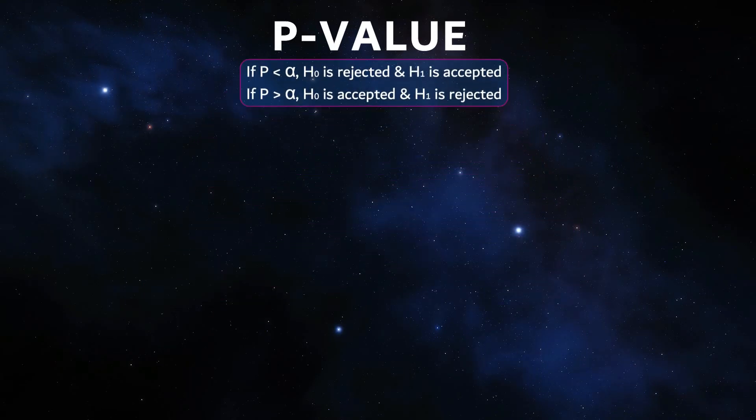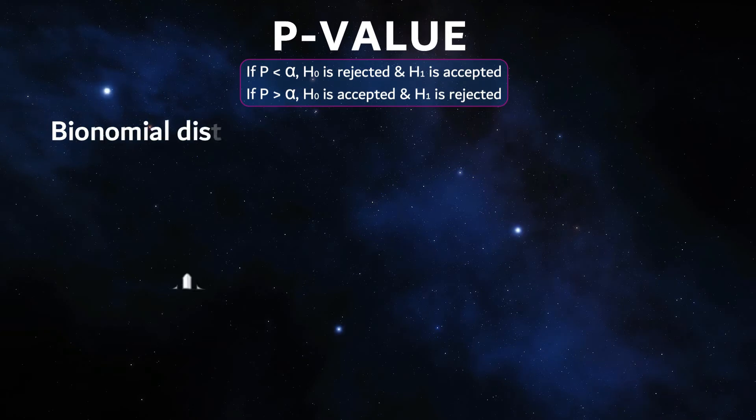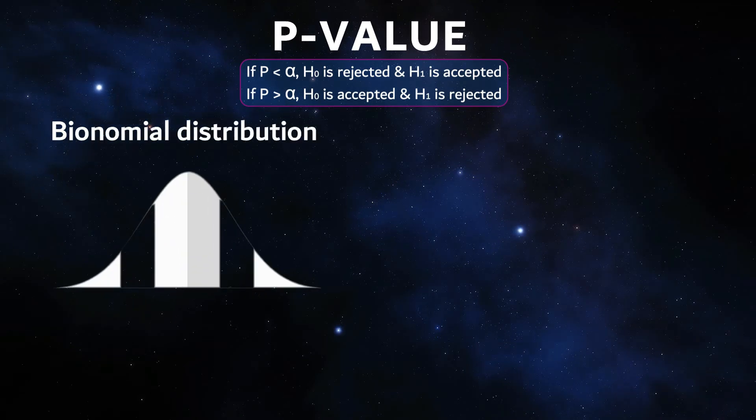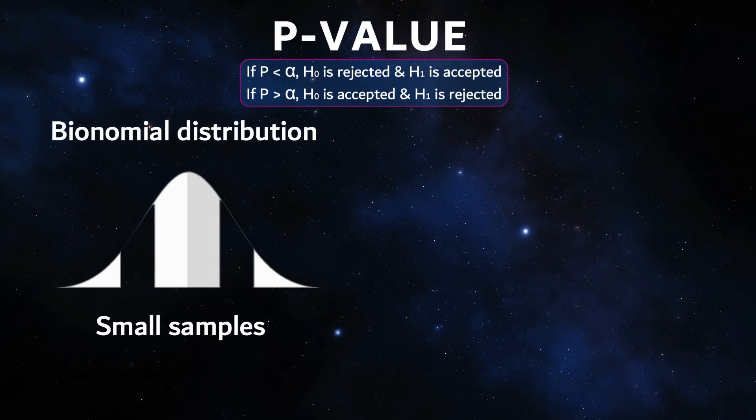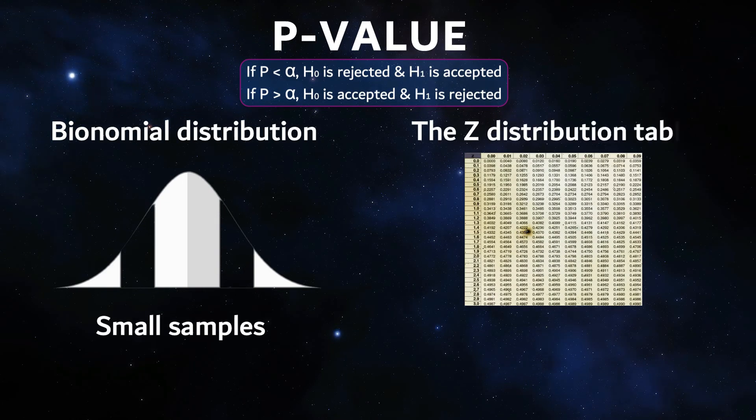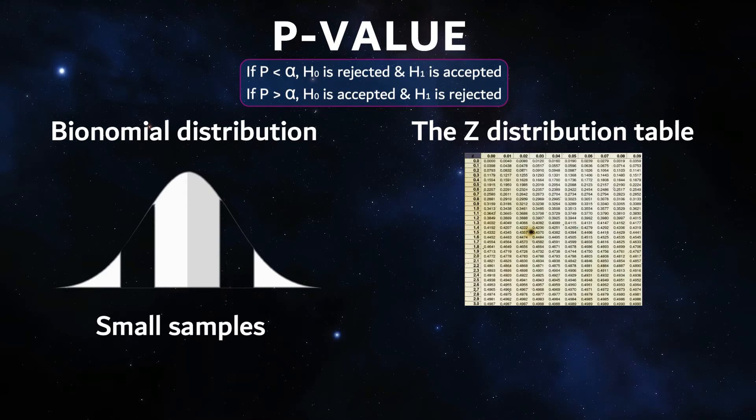The p-value can be calculated in two main ways. With the probability function of the binomial distribution, we use this for the small sample. Or in general with the Z transformation and the normal distribution table - this is for the big sample.